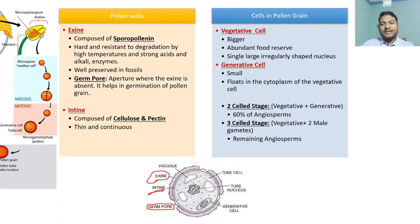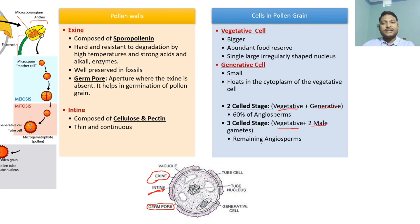60% of angiosperms release pollen in a two-cell stage, having one vegetative and one generative cell. The remaining angiosperms release their pollen grains in a three-cell stage — one vegetative cell and two male gametes. In these cases, the generative cell divides into the two male gametes before they are released.